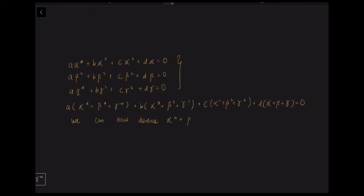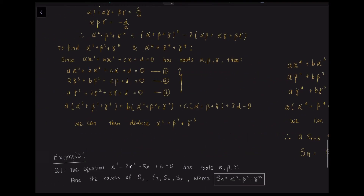By multiplying each equation by αⁿ, βⁿ, and γⁿ respectively and adding them together, we obtain a general recurrence: a·Sₙ₊₃ + b·Sₙ₊₂ + c·Sₙ₊₁ + d·Sₙ = 0, where Sₙ = αⁿ+βⁿ+γⁿ.